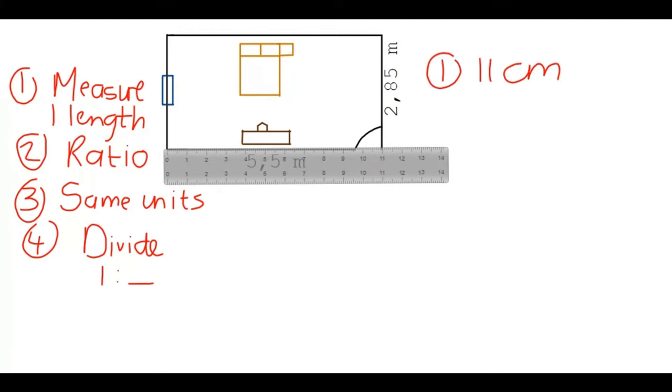Secondly, what was the ratio? We had 11 centimeters to something and it was that 5.5 meters. Okay, so we're going to say 5.5 meters. So, that's our second step. Now it says we need to get all of these in the same unit. Step 3.